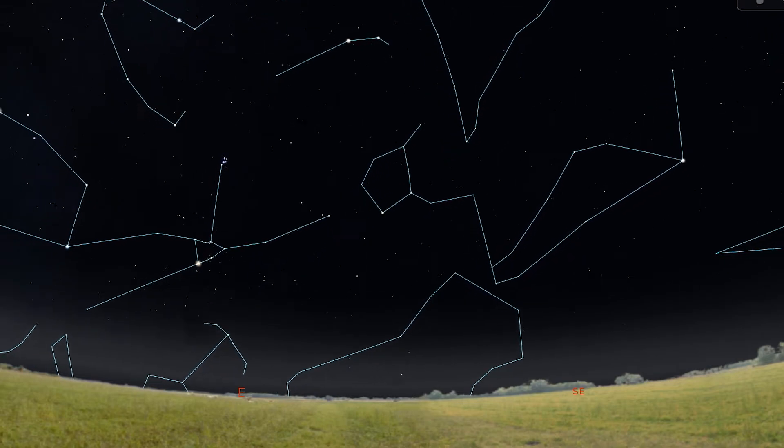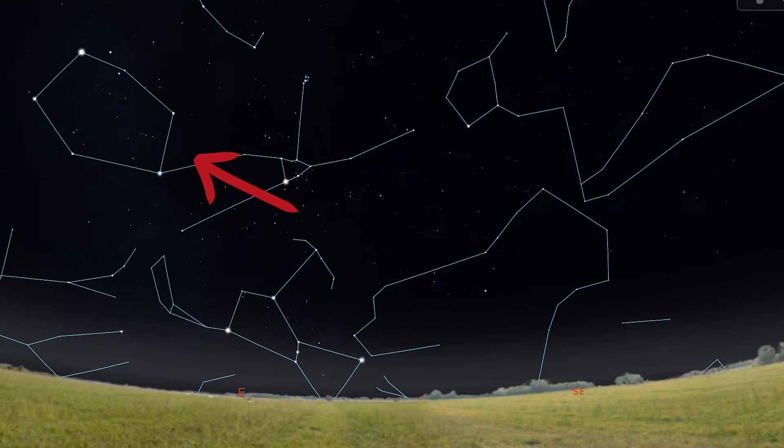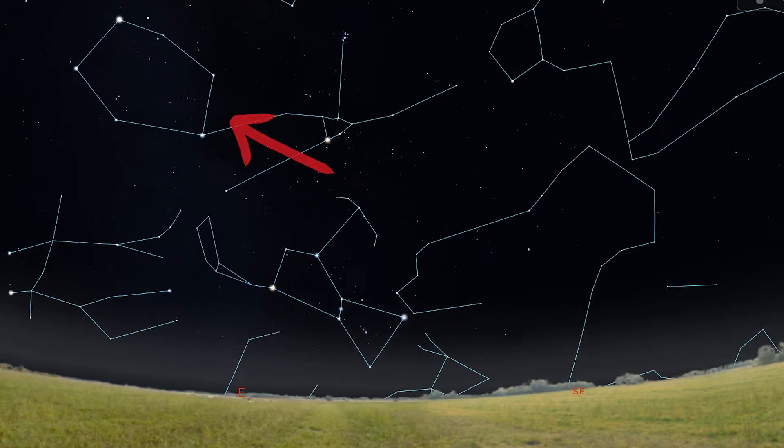Around that time of night in December, it'll be in the eastern sky. And by April, you'll find him starting to descend into the western horizon.